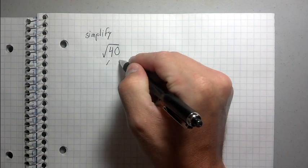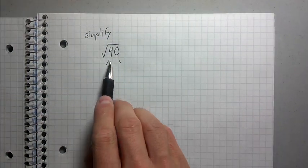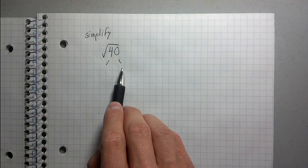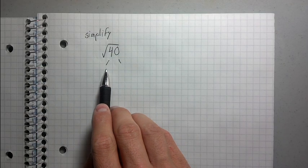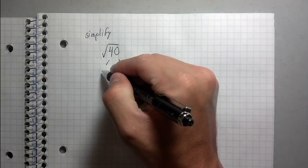So the way you do that is the first thing you do is you break down 40 into its constituent factors. So all you do is you just start thinking of numbers that multiply together to make 40. Well, I could think of 8 and 5 would work, 4 and 10 would work, so it doesn't matter which one I use.